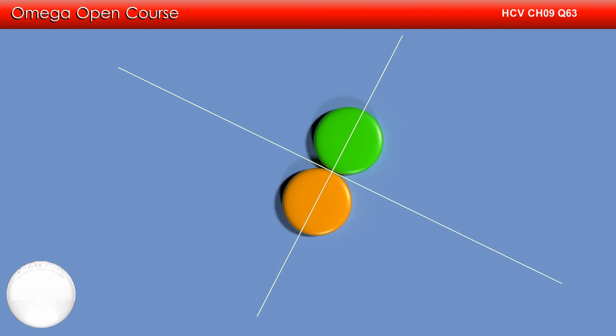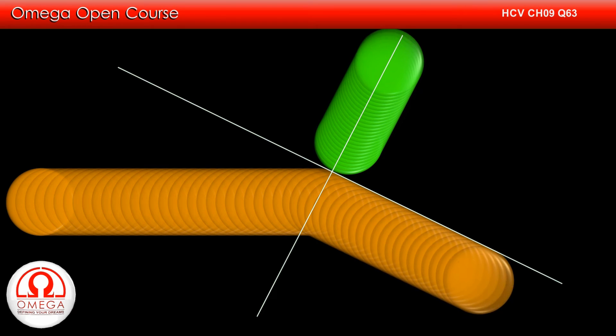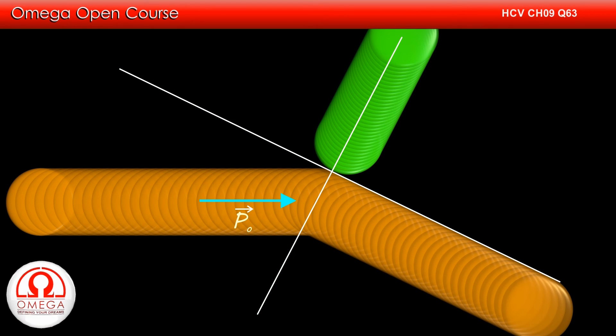Whereas in normal direction, the collision is similar to head-on collision. Let us look at the motion of the two bodies in detail. The incoming body has components of momentum along both these directions. In tangential direction, there is no collision at all, and hence the incoming body keeps moving in this direction without any change in its momentum.